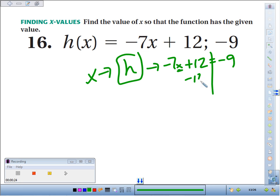So it's a fence-post problem. We'll subtract 12 on both sides. Negative 7x equals negative 9 minus 12 is negative 21. Divide by negative 7 to cancel out the times negative 7, and we get x equals 3.